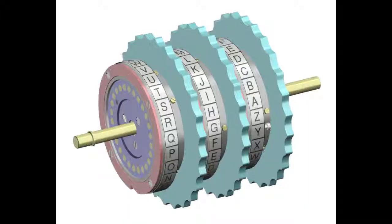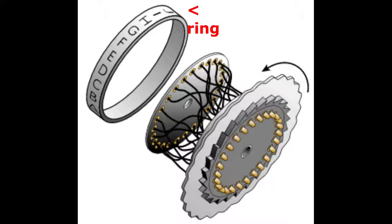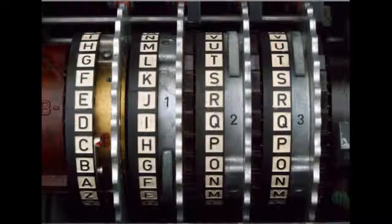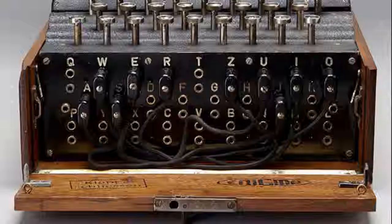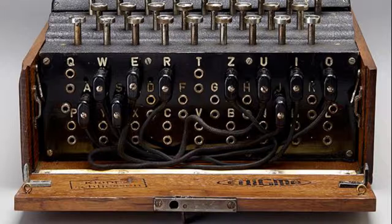To use an Enigma, the operator would first select and attach three of the eight available rotors, each one with a different internal wiring, and then adjust the rings around the rotors in conjunction with the rotor's specific wiring. Each of these rings was decorated with the letters of the alphabet from A to Z. At the bottom of the machine, in an area decorated with holes labeled with the letters of the alphabet, they would use a series of two-headed cables to link up different letter pairs, like A and Q. This was called steckering.